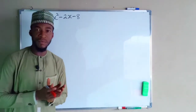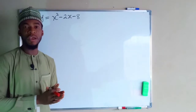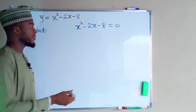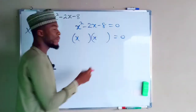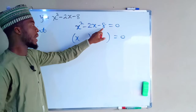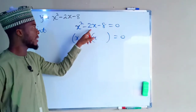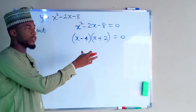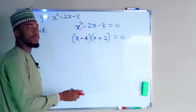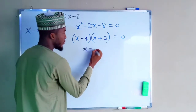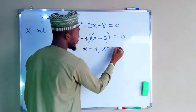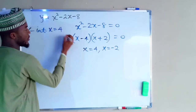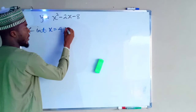First of all, I want to find the x-intercepts, which are the values of x when y equals 0 — they are also the roots of the equation. By factorization, I want two numbers which when multiplied give negative 8 and when added give negative 2. Those numbers are negative 4 and positive 2. Setting each factor equal to 0 gives x equals 4 and x equals negative 2. So these are the x-intercepts: x equals 4 and x equals negative 2.